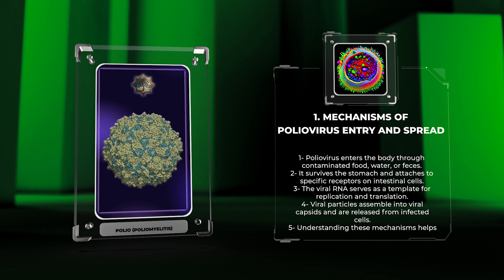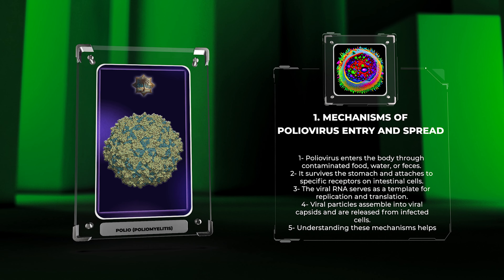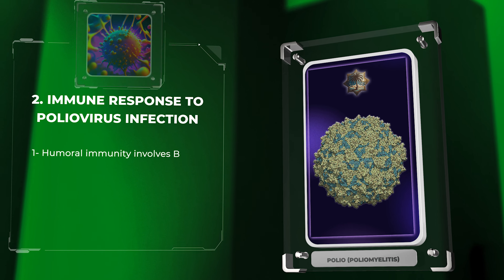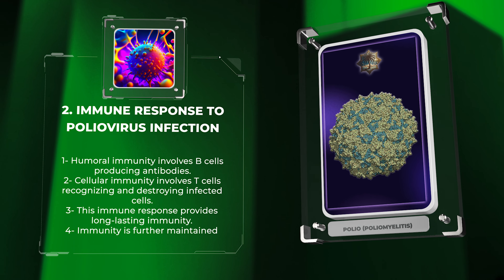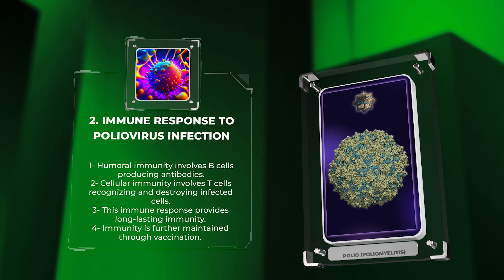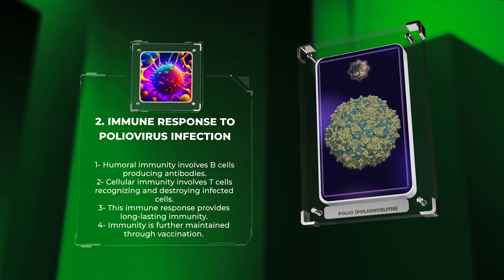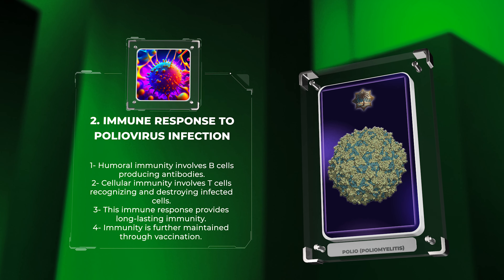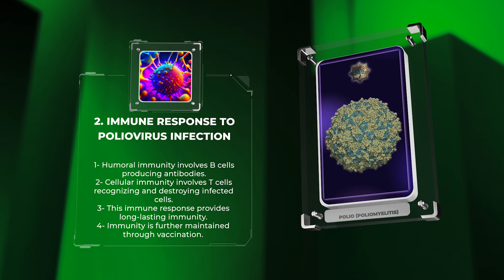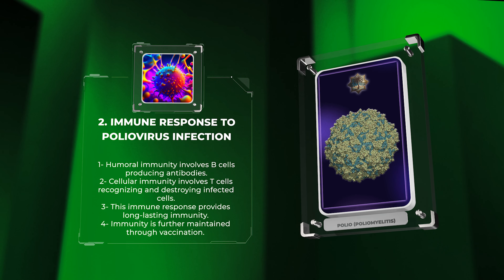Understanding these mechanisms helps in developing strategies against poliovirus. The immune system responds to poliovirus infection through humoral and cellular immunity. Humoral immunity involves B cells producing antibodies that neutralize the virus, preventing its replication and spread. Cellular immunity involves T cells recognizing and destroying infected cells. This immune response provides long-lasting immunity, which is further maintained through vaccination. Studying the immune response to poliovirus infection is important for developing prevention and treatment strategies.